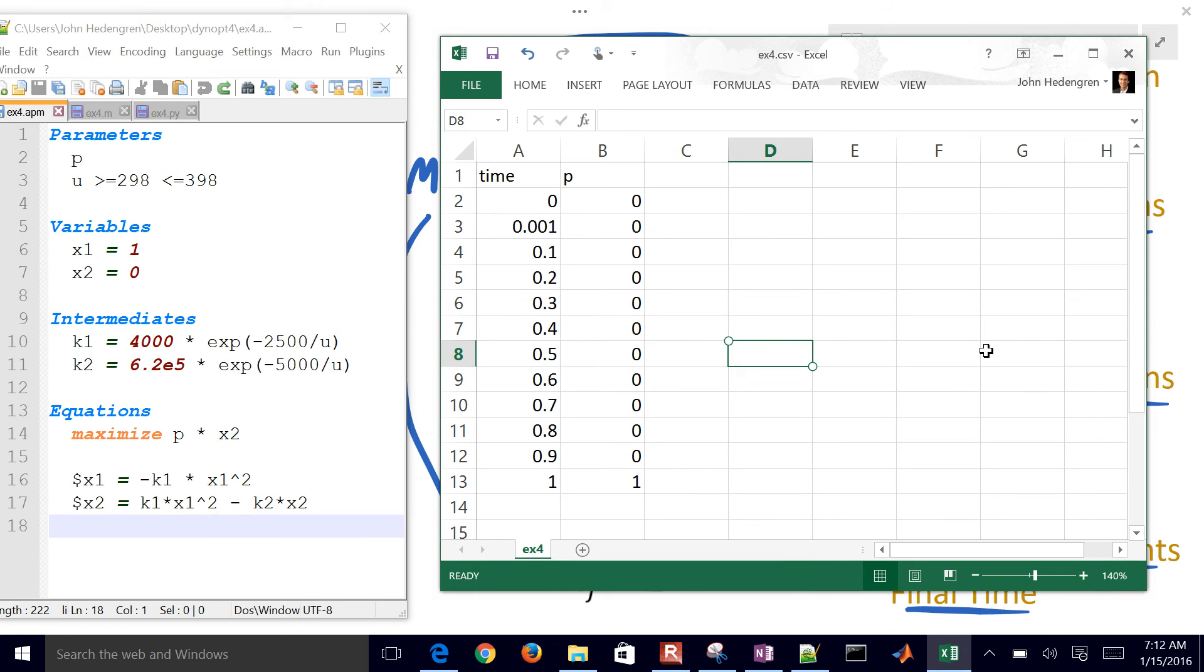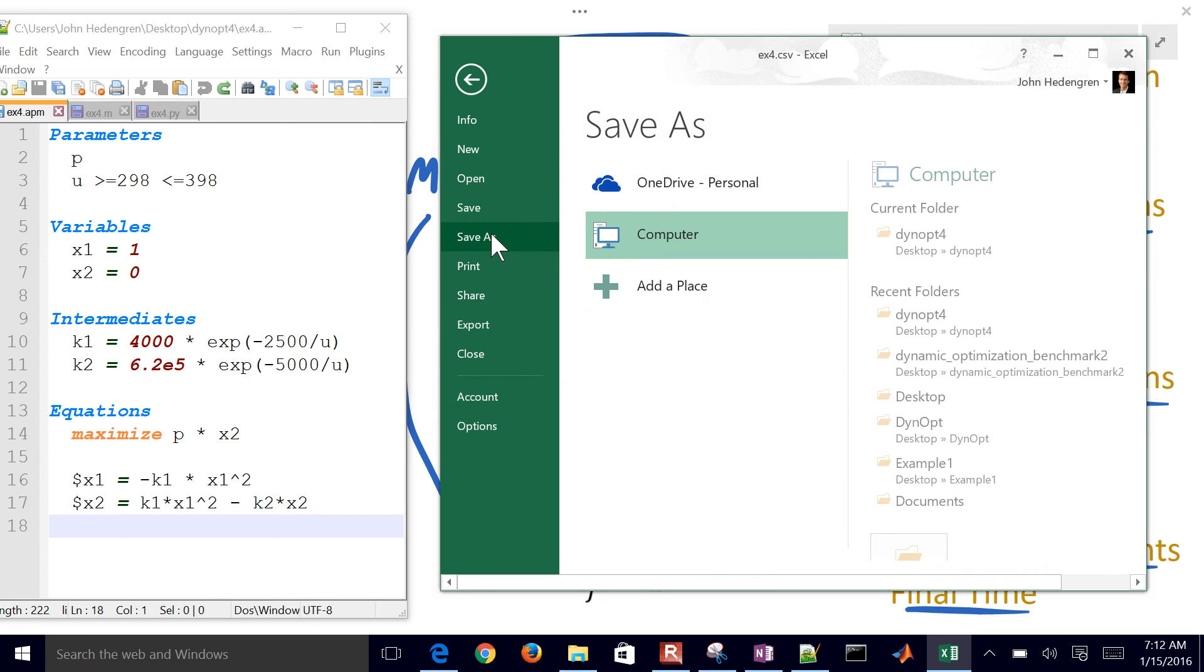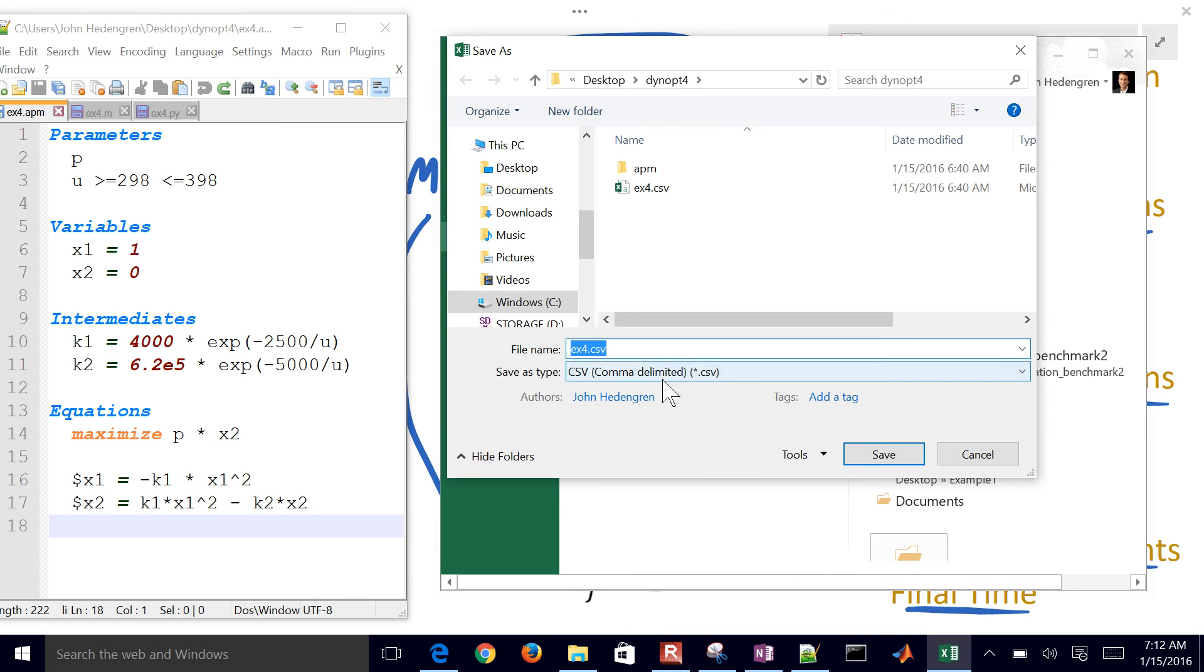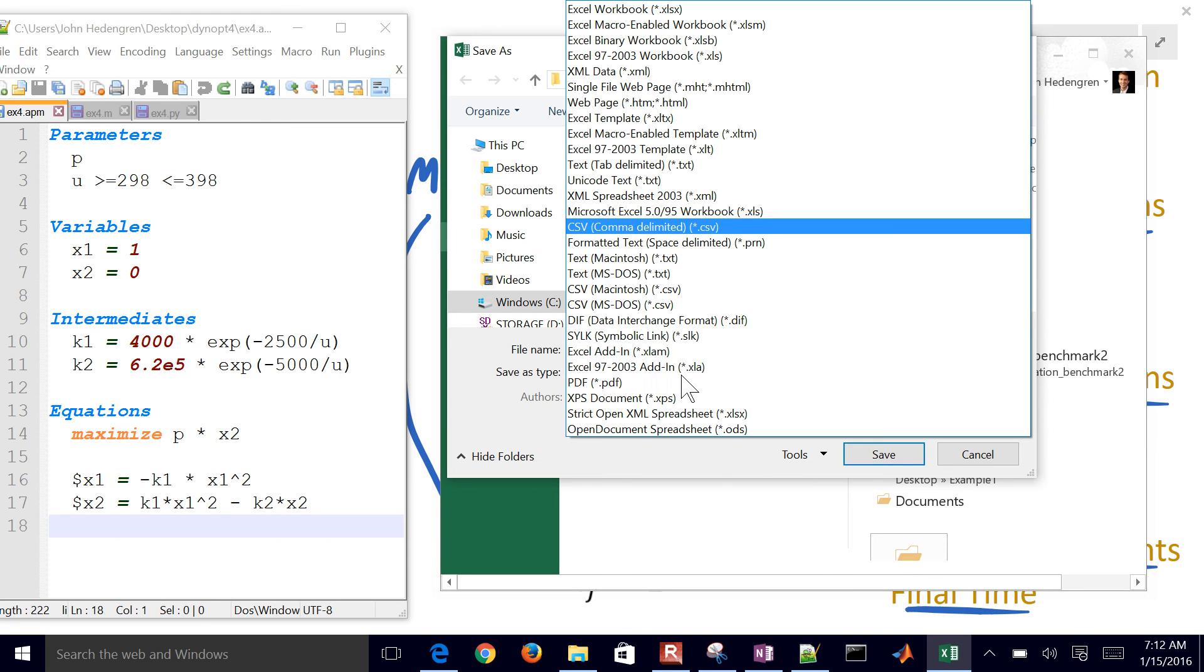I just need to save it as a CSV file. So go file, and then save as, and then make sure it's selected as a comma delimited. Don't select these other ones.